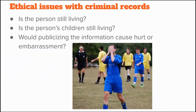Now let's think about the ethical issues that can arise when you find criminal records. Sharing information about family criminal records can raise serious ethical issues because family members can be hurt or embarrassed by the distribution of information about black sheep family members. As you consider what information to reveal, ask yourself: Is the accused person still alive? Are that person's children still alive? Would publicizing that information cause hurt, embarrassment, or any other type of harm? I chose not to use information about a family case from the late 1980s as an example because one of the accused is still living and children of the deceased accused are still living. Please be sensitive to ethical issues as you pursue criminal records in your genealogy research.